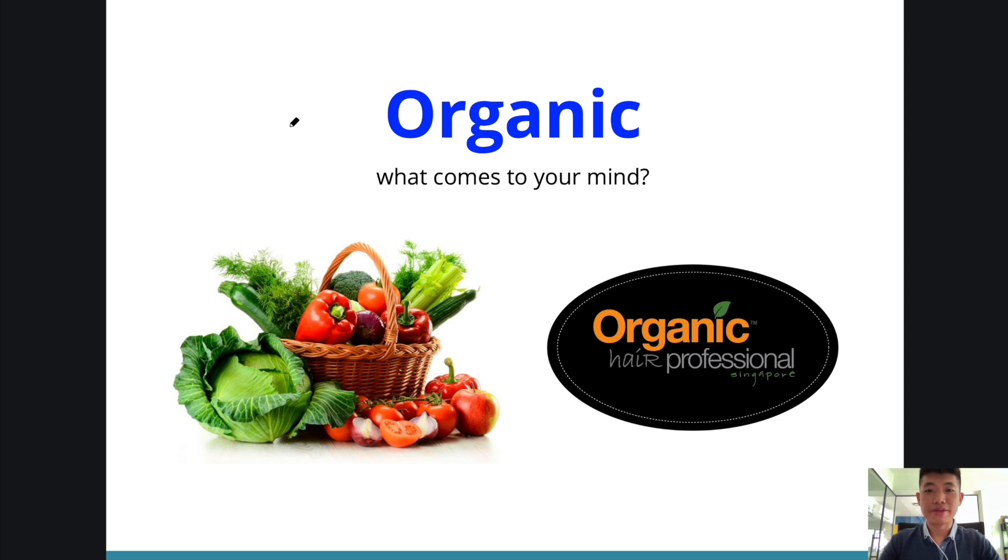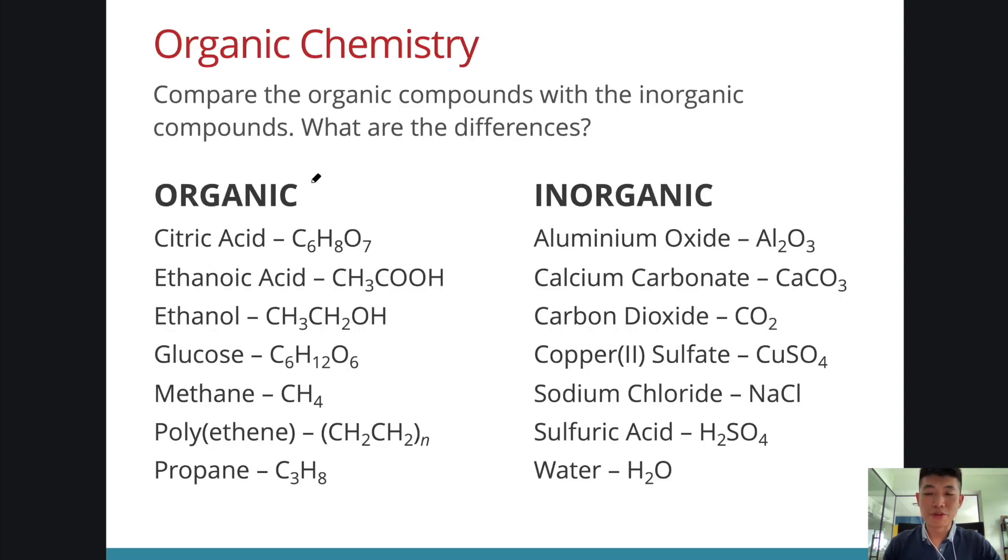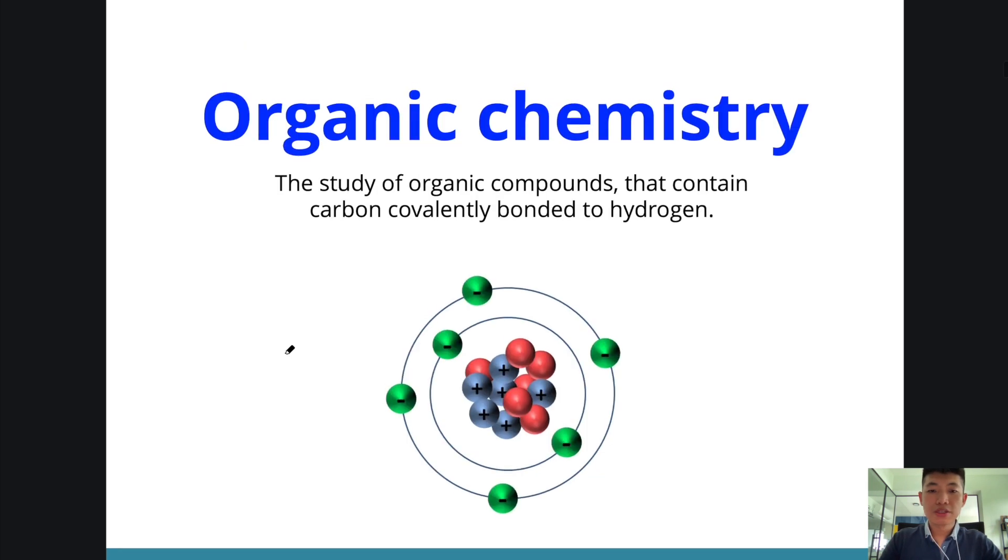When we think of the term organic, most of us may think of organic products, organic produce. But when it comes to chemistry, the term organic actually means something else. Basically, it is the study of carbon-based molecules. Over here, you will see on the left examples of organic molecules. We find that for organic molecules, they are all based on carbon. Carbon is the main atom that is present. It doesn't mean that having carbon automatically makes it an organic molecule, but all organic molecules definitely contain carbon. And many of them contain carbon, hydrogen and oxygen.